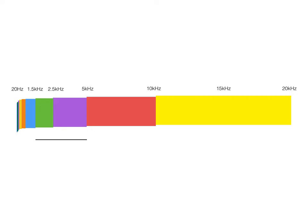Most commonly, you will hear the frequency range of human hearing as 20 Hz to 20,000 Hz, or 20 kHz. In reality, the upper part of the range is different with each person. Anything over 15 kHz is difficult for us to perceive.